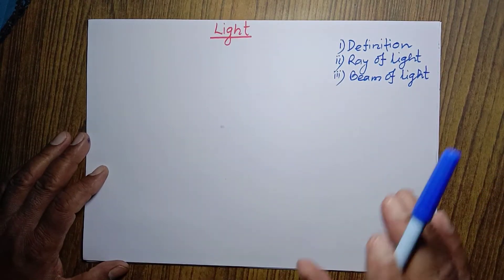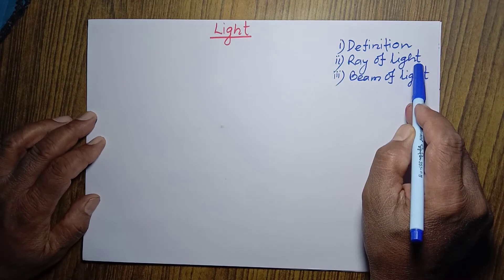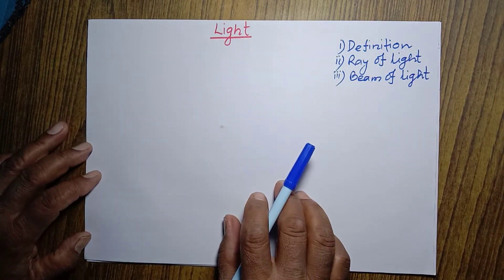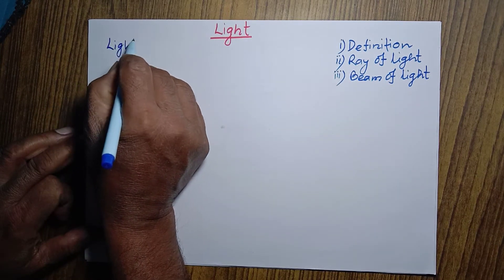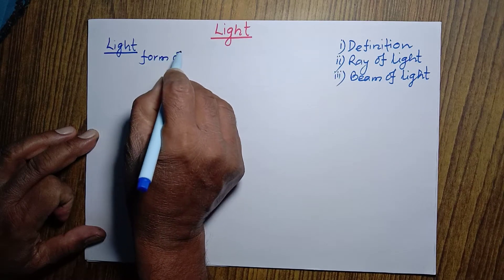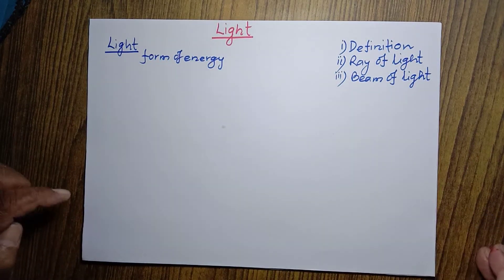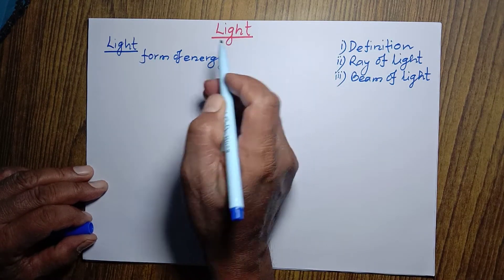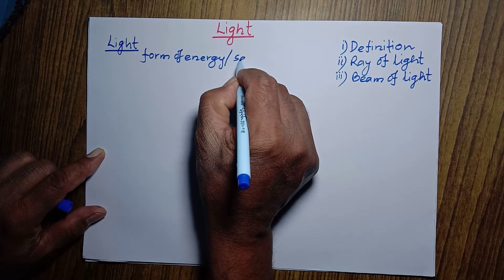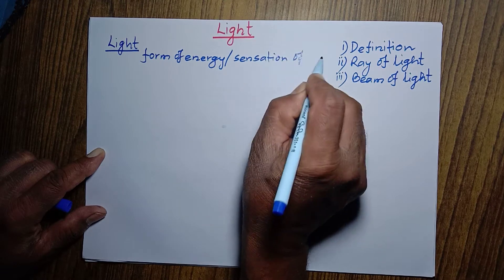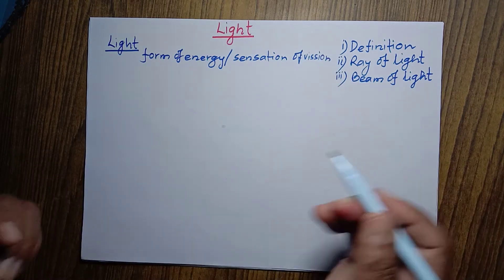Today I want to talk about three very simple terms related to light: the definition of light, ray of light, and beam of light. Light is a form of energy — just like heat energy, magnetic energy, electrical energy, and sound energy. Light is that form of energy which gives sensation of vision. These two points are important to define light.